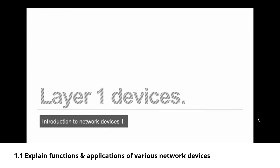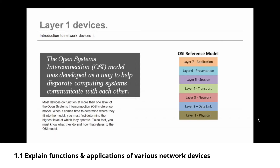I'm going to begin with layer one devices, but before talking about those, we need to discuss the Open Systems Interconnection model — the OSI model. It was developed as a way to help disparate computing systems communicate with each other. The OSI reference model has seven layers: layer one is the physical layer, layer two is data link, layer three is network, layer four is transport, layer five is session, layer six is presentation, and layer seven is application.